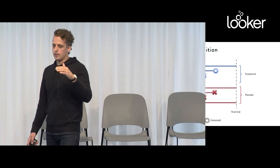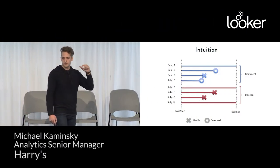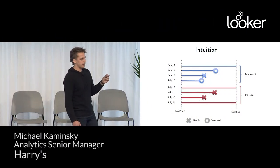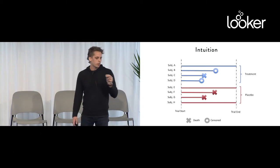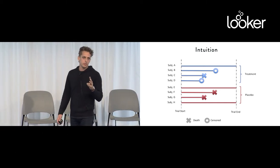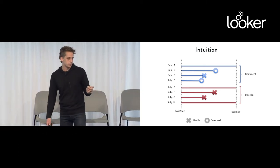So with that framework in mind, we can look at these data and start thinking about what the marginal death rate is going to be in these different treatment arms. In the treatment arm, subject C is the only patient who dies. At that point, there are three patients exposed to death because one of the patients was already censored.